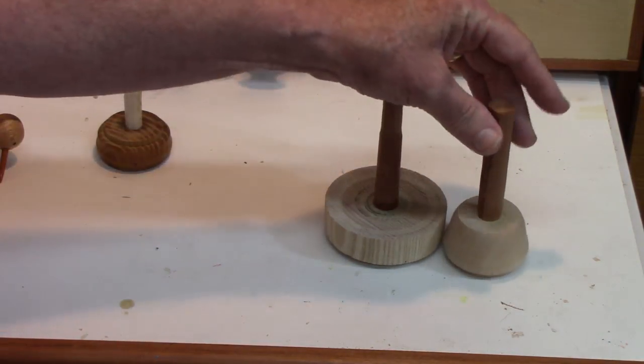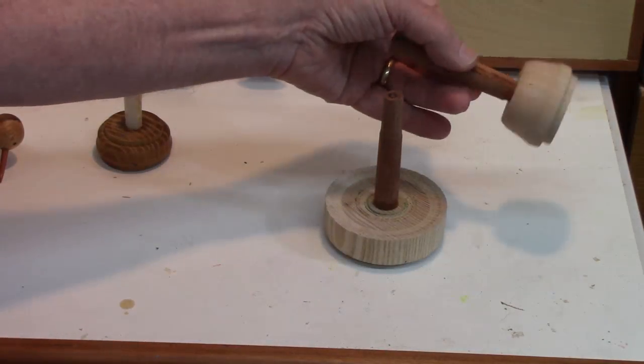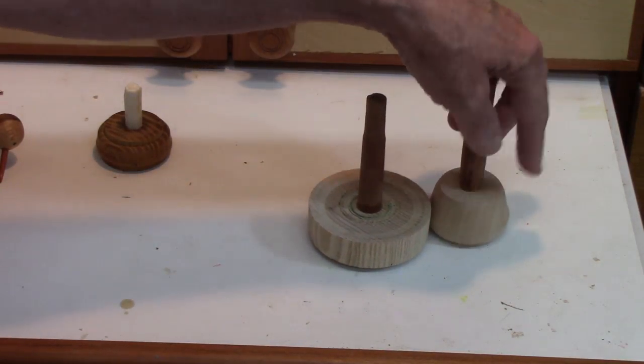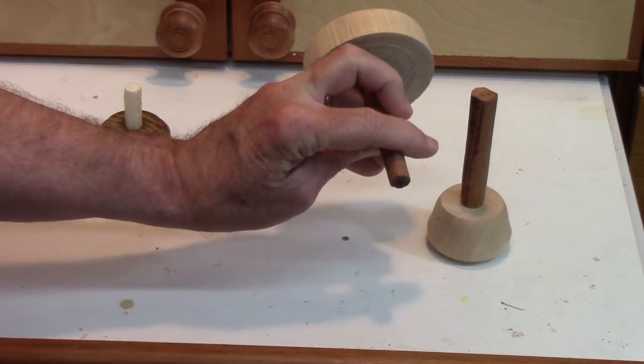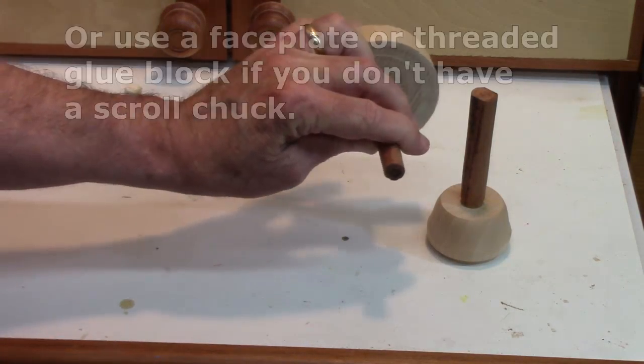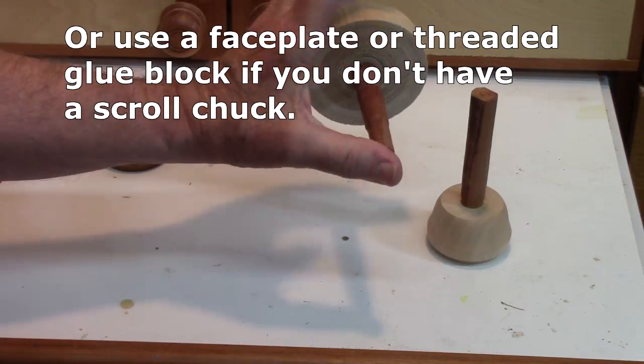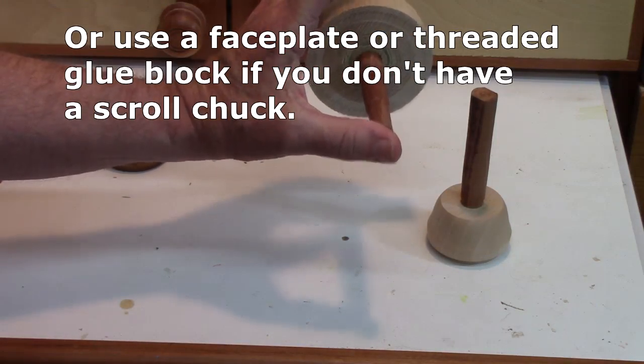Just put a little tenon, make a little recess and glue it in. Put the spindle on your chuck and line this up with your tailstock to get it centered and put a little pressure on it.